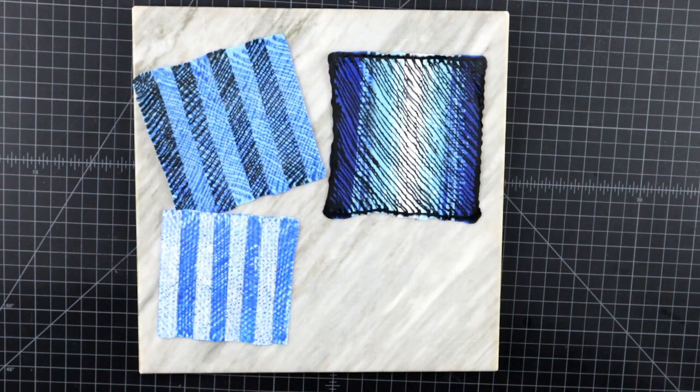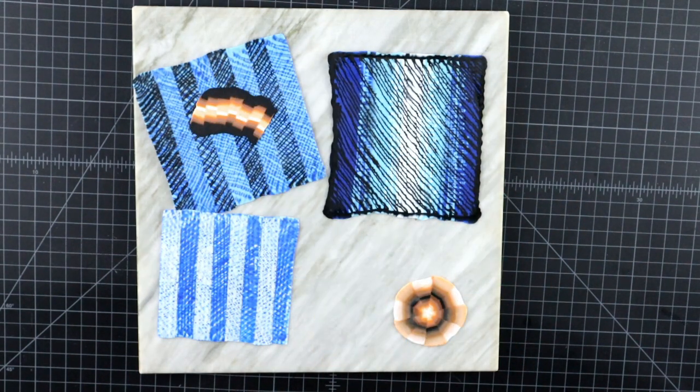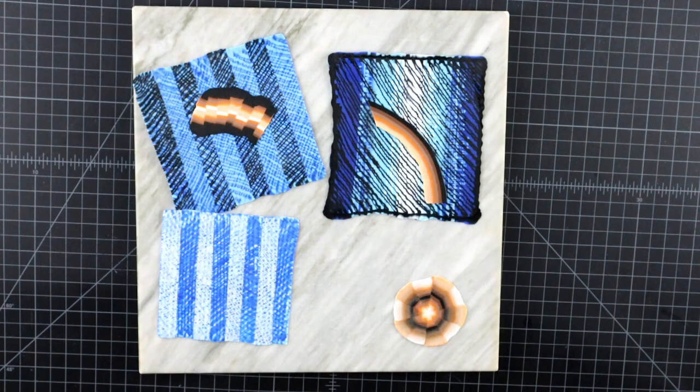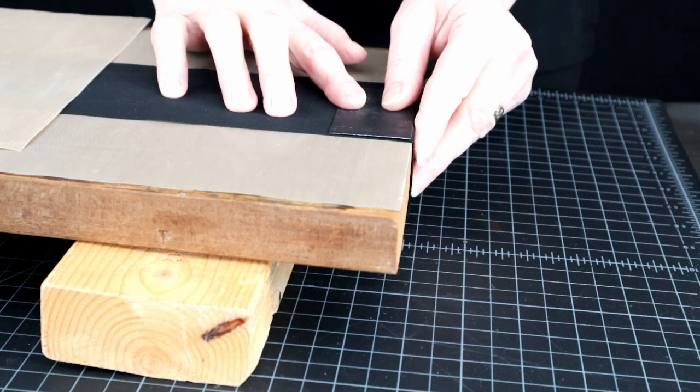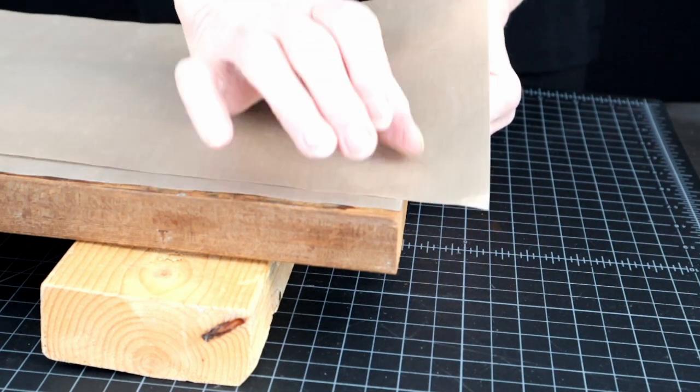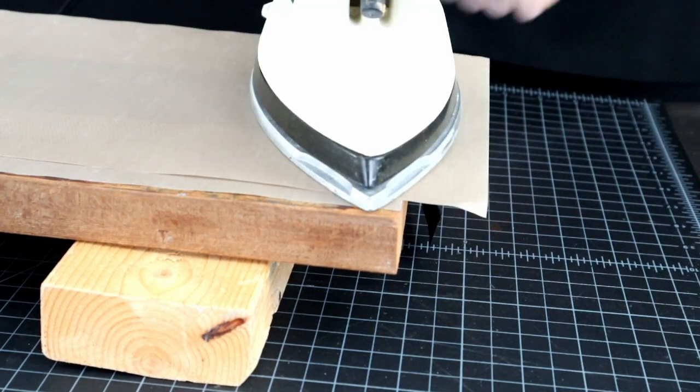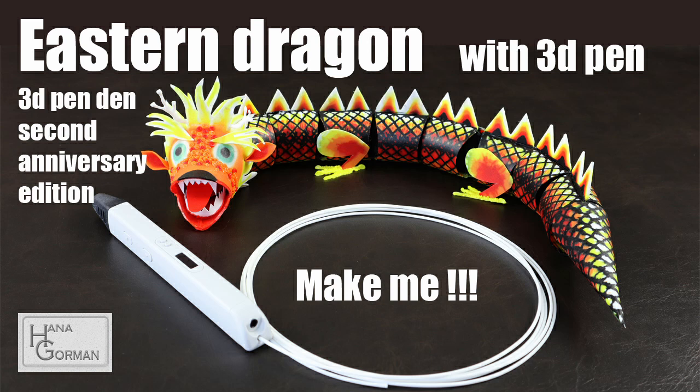Ironing lets you work with multiple colors of filament to produce one-of-a-kind color patterns, and it also lets you attach the filament parts to fabric, as in the Eastern Dragon project. The link to that one is also in the description.